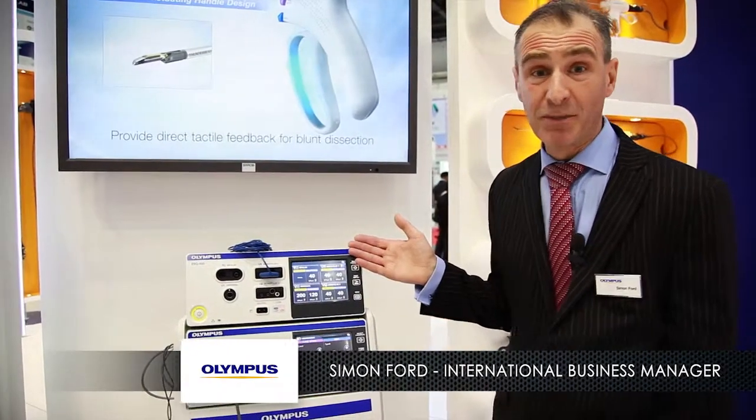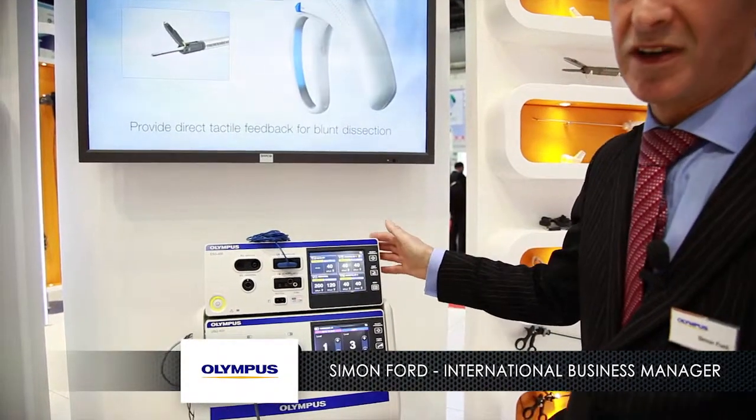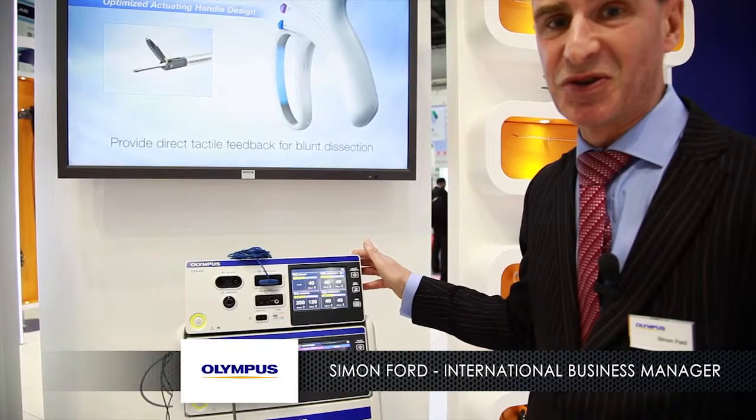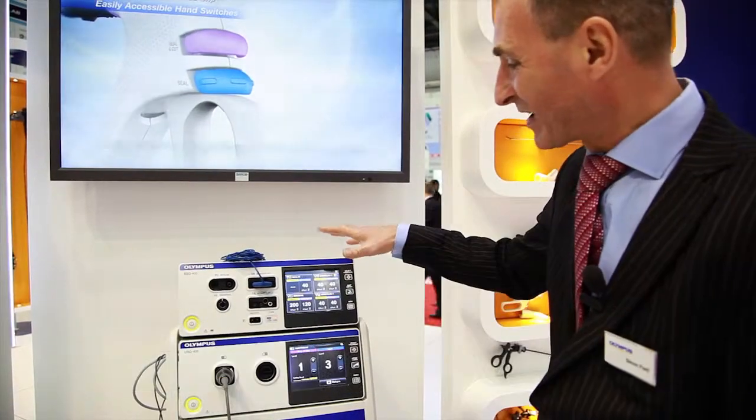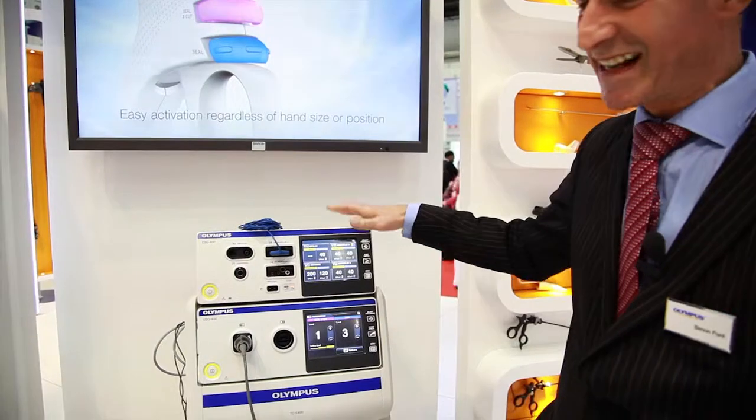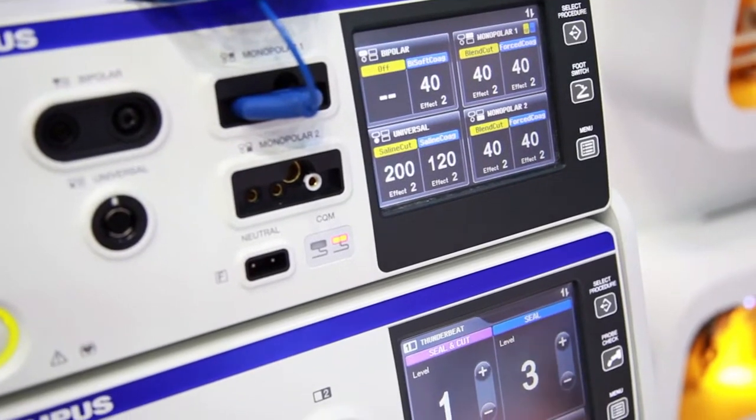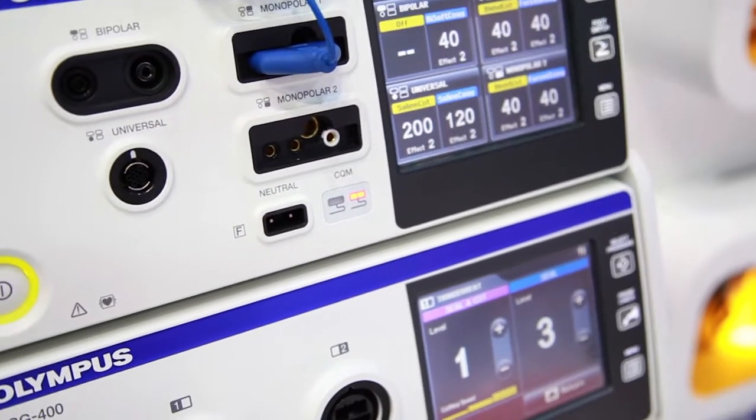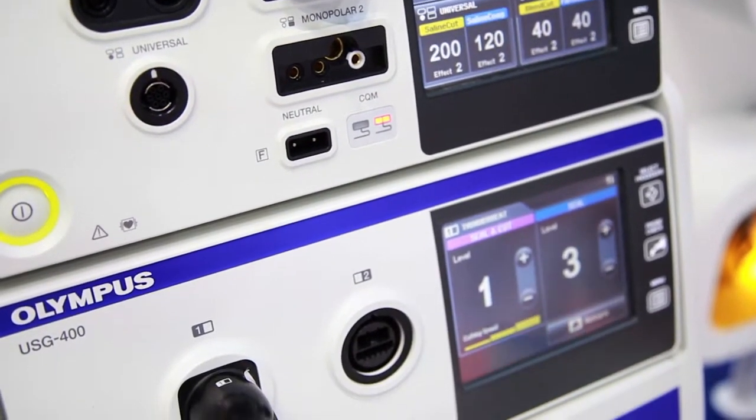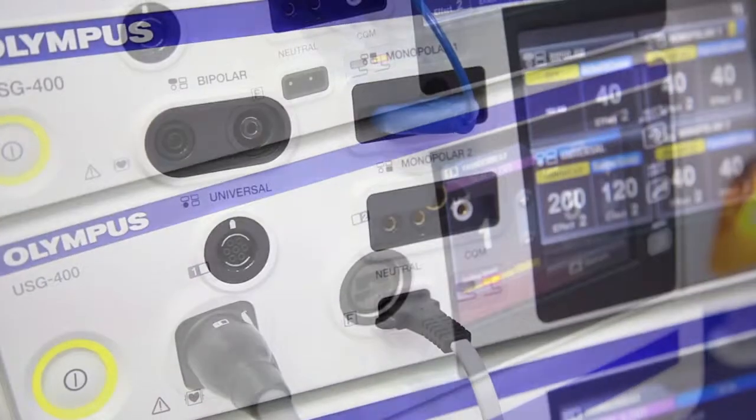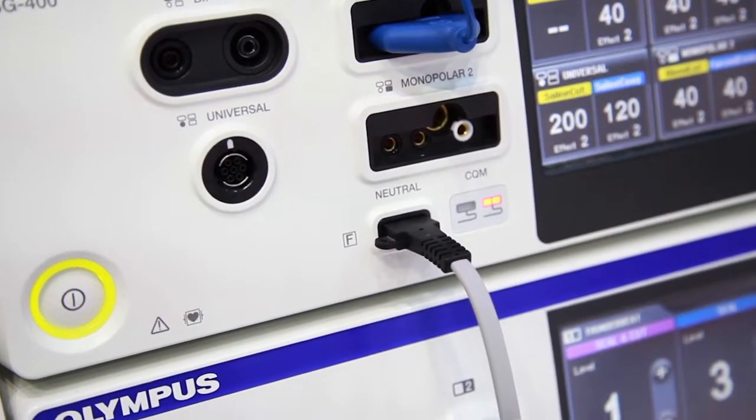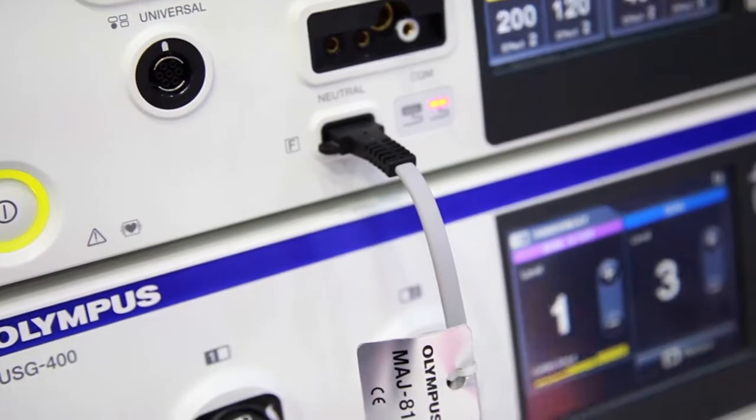I'm going to present to you the Olympus Energy System called the STMS, Surgical Tissue Management System, comprises of two generators, the electrosurgical generator and the ultrasonic generator. The electrosurgical generator provides a bipolar channel of energy and two monopolar channels of energy and it's controlled through this graphic user interface here.